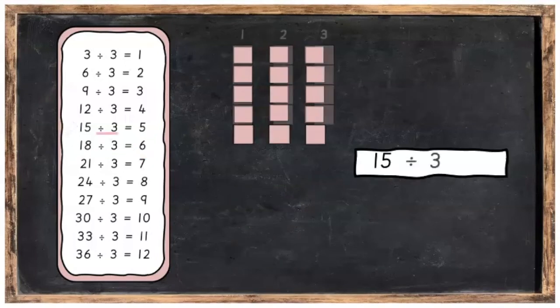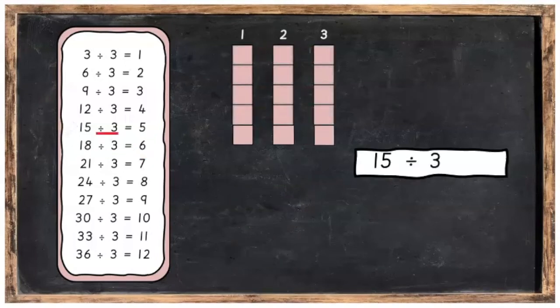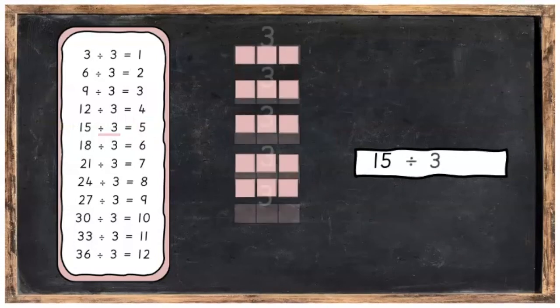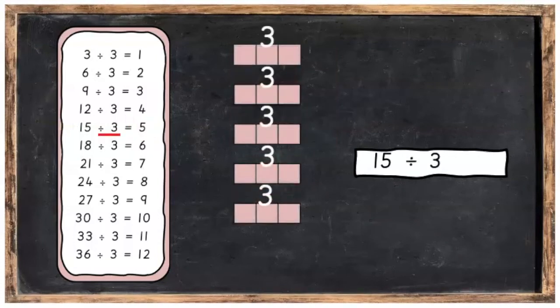15 divided into 3 equal parts, you're going to get 5 in each part. But 15 divided into 3's, you're going to get 5 groups of 3.